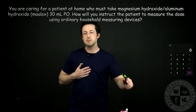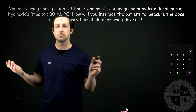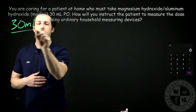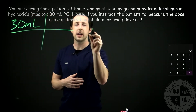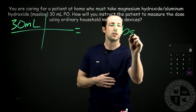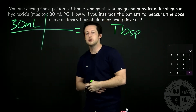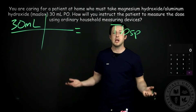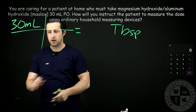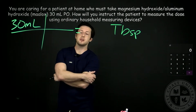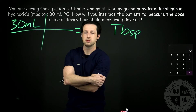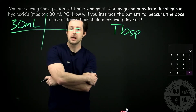We have 30 mLs — that's where we need to start because that's the only number we have. We draw our bridge, and we need tablespoons, so our answer needs to be in tablespoons. The one conversion factor we need is how many mLs are in a tablespoon, and the conversion factor is one tablespoon equals 15 mLs.